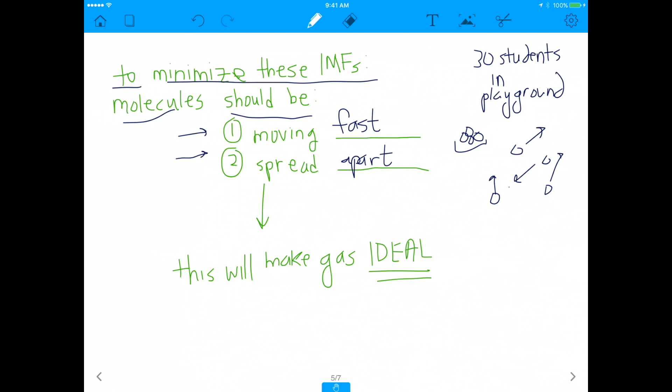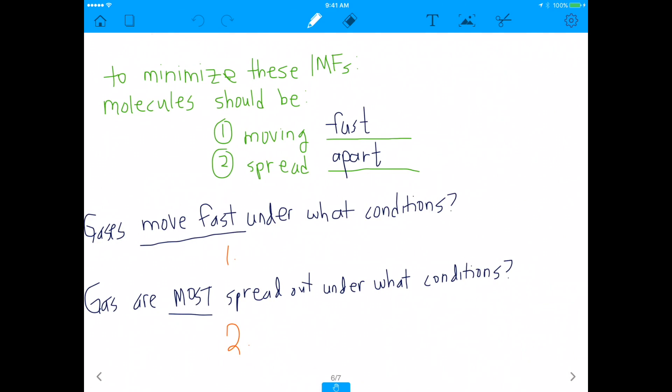But on top of that, there's another way we can minimize intermolecular forces, and that's to have everyone spread apart. If we have everyone moving fast and spread apart on a playground, they'll be not clumped together. We will not have this situation that I've drawn. Instead, we'll have this situation where everyone's moving very, very quickly. This will make the gas ideal. So, how can we do that? How can we have someone moving fast and spread apart? Well, now let's relate this back to our kinetic molecular theory. When do gases move fast? How do gases move fast? Remember, according to the kinetic molecular theory, gases move fast when the temperature is high. Remember that? The fourth condition of the kinetic molecular theory was high temperature.